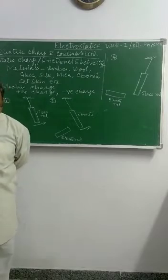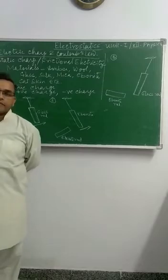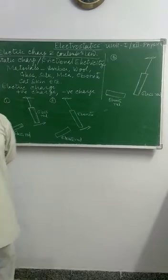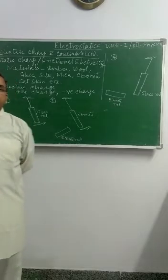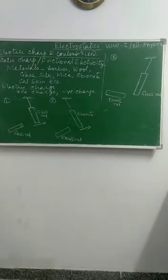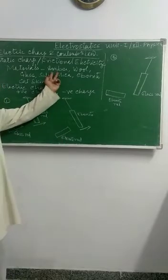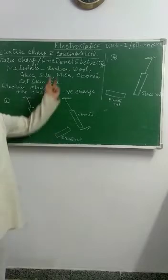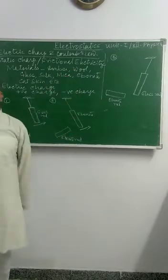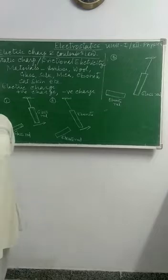In ancient times, when one body rubs with the other, it acquires the property of attracting others. There is some material; in Greek it is called Electro. When rubbed with wool, it acquires the property of attracting others.